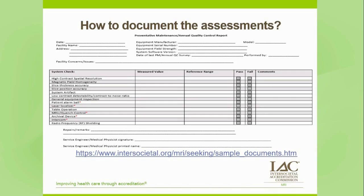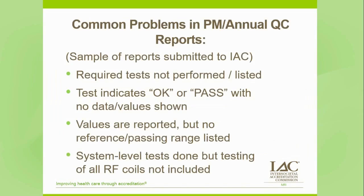Some facilities include this document to supplement their PM or annual survey report provided by the engineer or medical physicist. Something to keep in mind: when this document was created, assessments were included that are above and beyond those required by the IAC MRI standards, to capture most routine assessments typically performed during PMs and annual surveys. The additional assessments are indicated with a red asterisk. Now that we've gone over the assessments, how often they need to be done, and who does them, let's talk about some of the issues encountered with PM and annual QC survey reports.